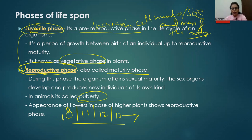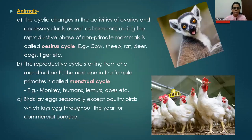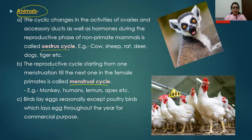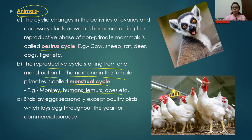Let's discuss the reproductive phase in detail in animals and plants. In animals, there are two types of reproductive cycles: the estrous cycle and the menstrual cycle. The menstrual cycle is a reproductive cycle starting from one menstruation to the next in female primates like monkeys, humans, lemurs, and apes. In human females, the menstrual cycle occurs at an interval of 28 to 35 days every month, and it happens only during the reproductive phase.